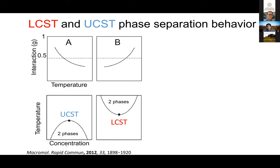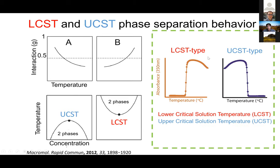Building full phase diagrams to understand LCST or UCST behavior is complicated. We've taken a simpler approach, looking at cloud points. We take a solution with a polymer at a given concentration, titrate the temperature, and measure absorbance or turbidity. We can detect a sharp transition from a soluble state to an insoluble state. For LCST, polymers become insoluble as you increase temperature; for UCST, polymers become soluble as you increase temperature.